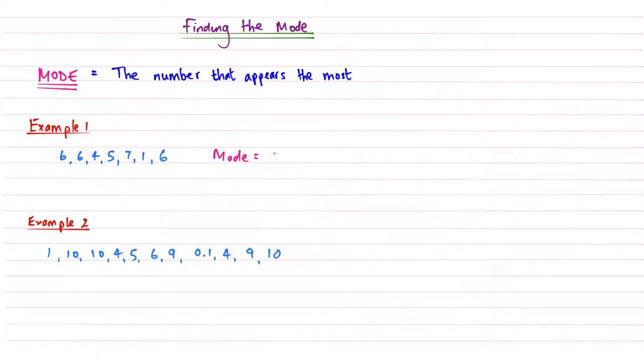Then if we have a look at example number two, if we just scan through we can see that the number that appears the most is 10. So the mode of the second set of numbers is going to be 10. And that's all the mode is when we're dealing with numerical values - it's the number that occurs the most.